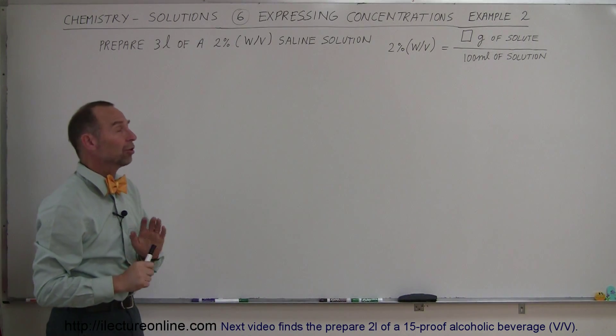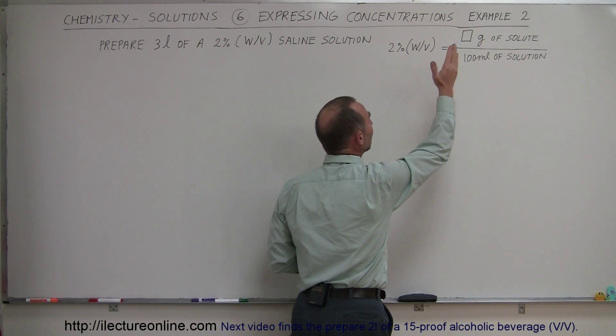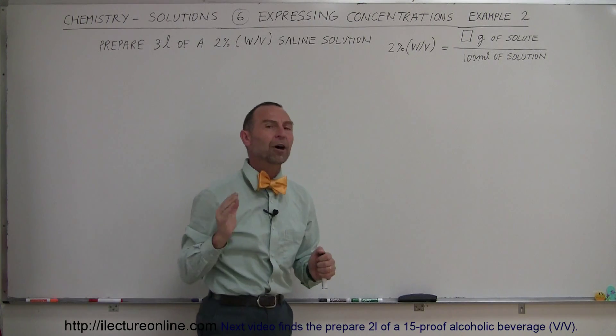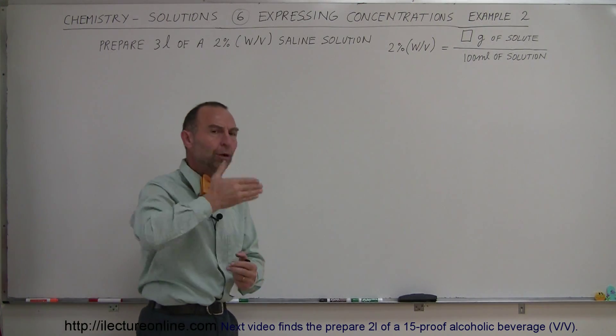But that's what the definition is. We have to understand that we're looking for a 2% ratio between the weight and the volume when the weight is expressed in grams and the volume expressed in milliliters. So you just have to kind of ignore the units and just look at the ratio.